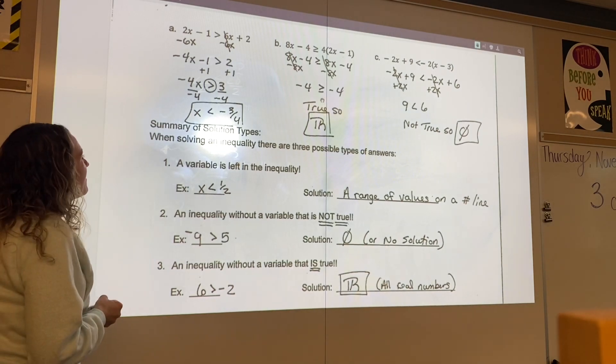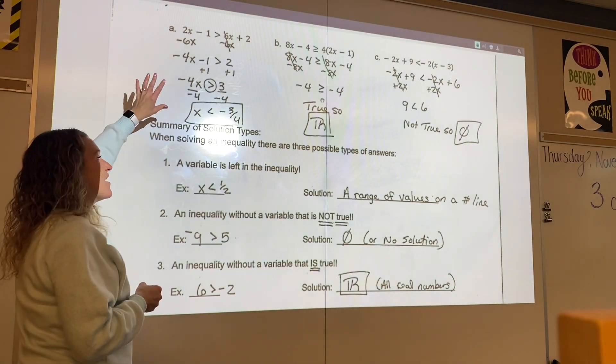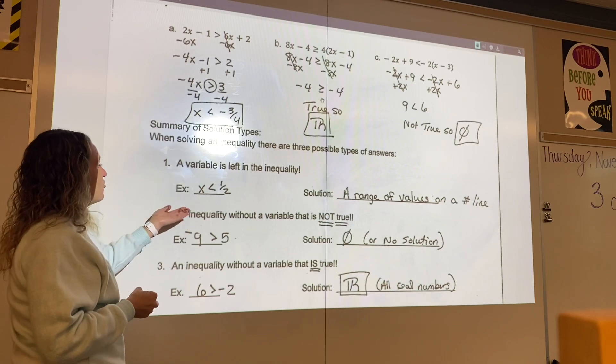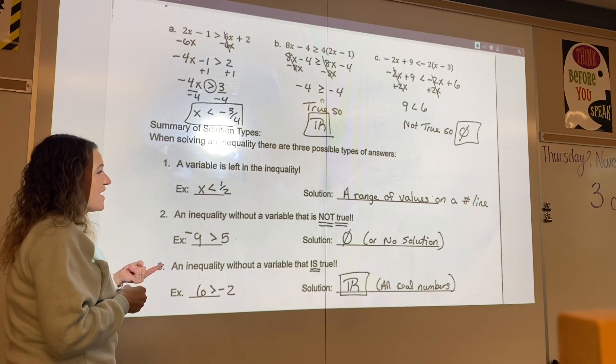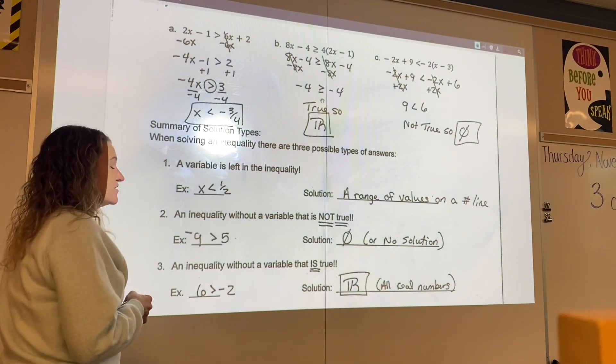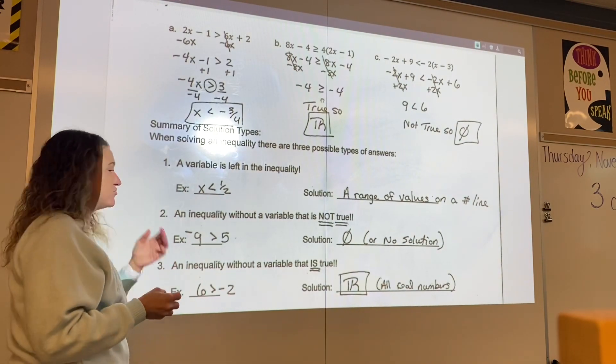So when we found that we had a variable on the left, in the inequality, such as this example, or x is less than 1 half, then the solution is a range of values on a number line. That's why we do share a number line. But it's not just one solution. There's many solutions.